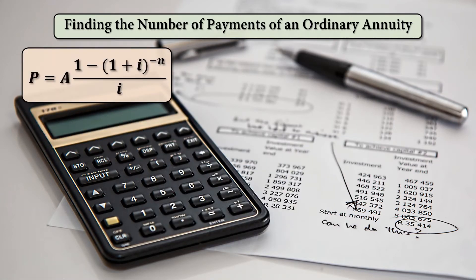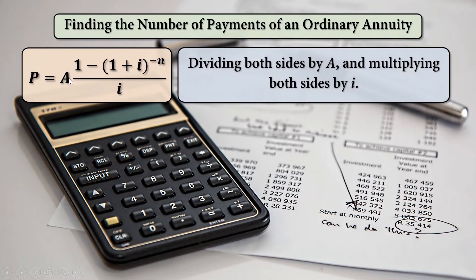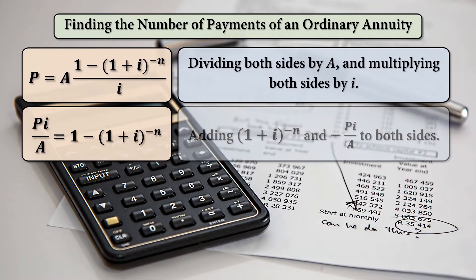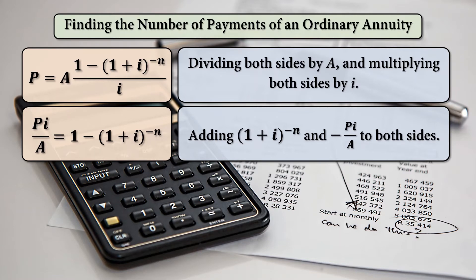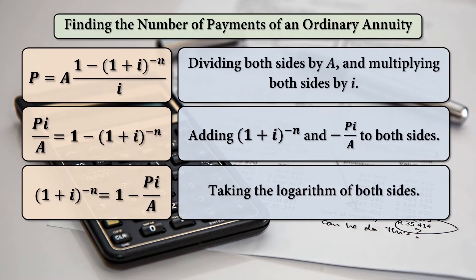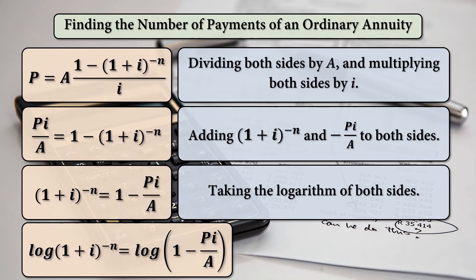Finding for N again if P is given, from the formula of P if A is given, we divide both sides by A and multiply both sides by I, giving PI over A. Adding 1 plus I raised to negative N and negative PI over A to both sides, the result will be 1 plus I raised to negative N is equal to 1 minus PI over A. Then taking the logarithm of both sides, that is log of 1 plus I raised to negative N is equal to log of the quantity 1 minus PI over A.